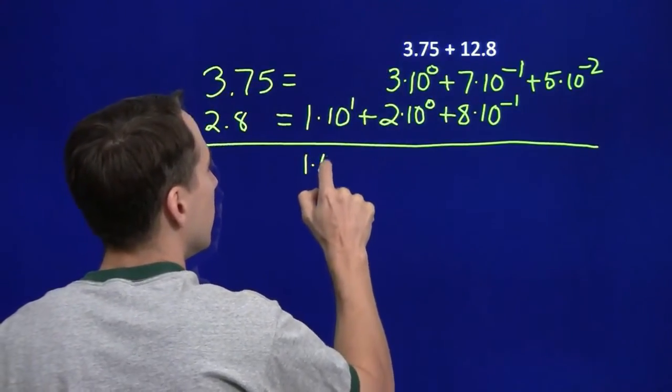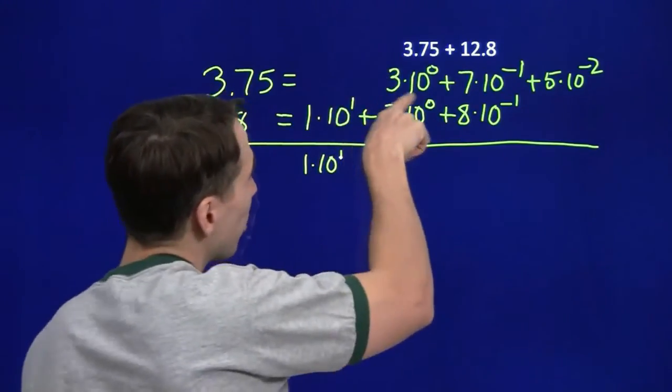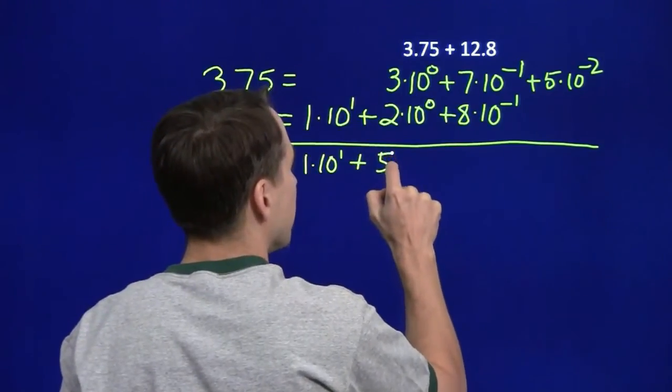We have the 1 times 10 to the first. There's no 10 to the first up here to combine it with. Here we have 3 times 10 to the 0 plus 2 times 10 to the 0. That's just 5 times 10 to the 0.